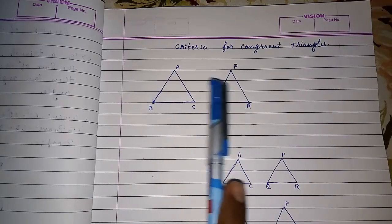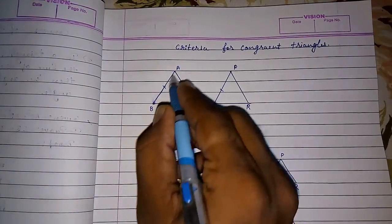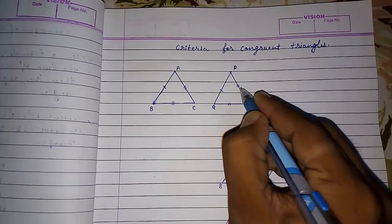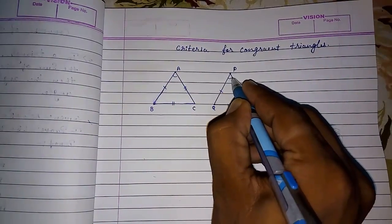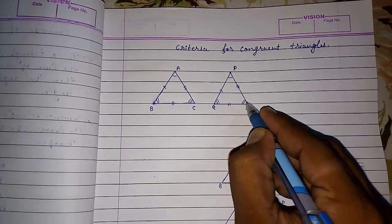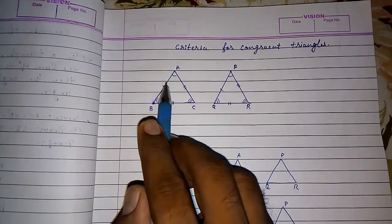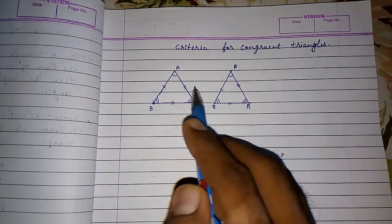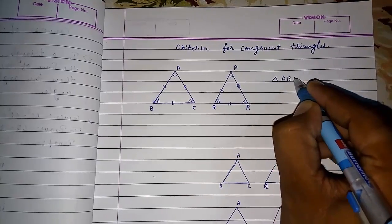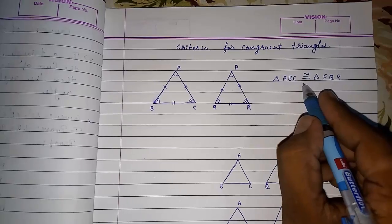So look here. If two triangles are given to you and all their sides are equal — AB equals PQ, BC equals QR, AC equals PR — and all their angles are equal — angle A equals angle P, angle B equals angle Q, and angle C equals angle R — then we can say these two triangles are congruent. So I can write: triangle ABC is congruent to triangle PQR. This symbol represents congruency.